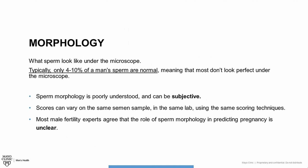Morphology refers to what sperm look like under the microscope. It's reported as the percentage of sperm that meet very strict criteria for what normal sperm should look like. Typically, only 4 to 10% of a man's sperm are normal, meaning that the vast majority don't look perfect under the microscope. Morphology is not related to the risk of birth defects. Sperm morphology is poorly understood — scores can vary on the same semen sample in the same lab using the same scoring techniques. I typically tell patients not to worry about morphology, especially if their other numbers are normal.